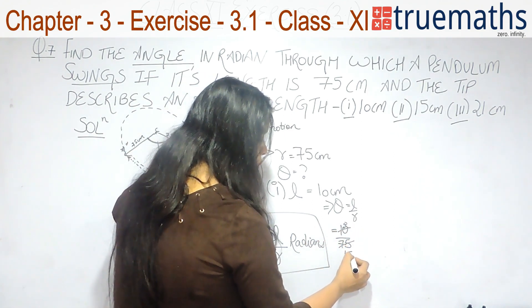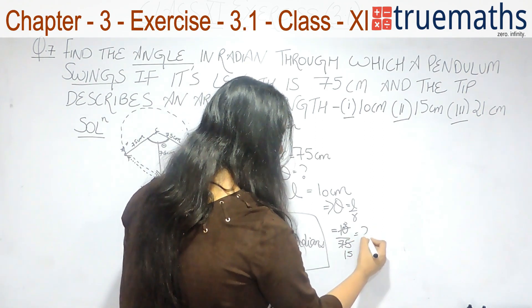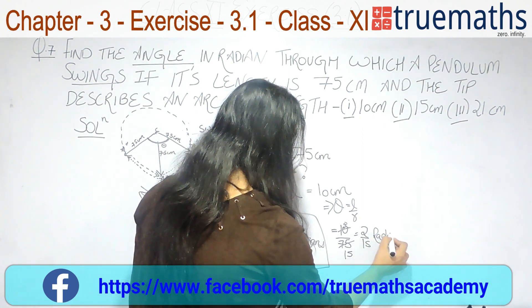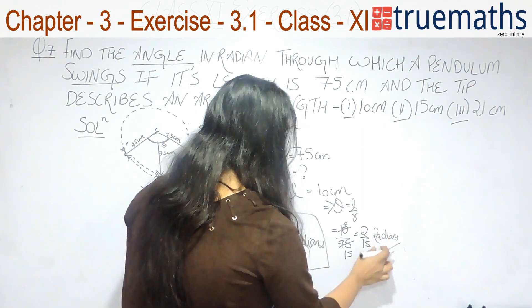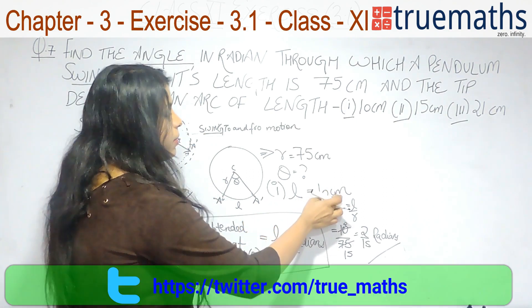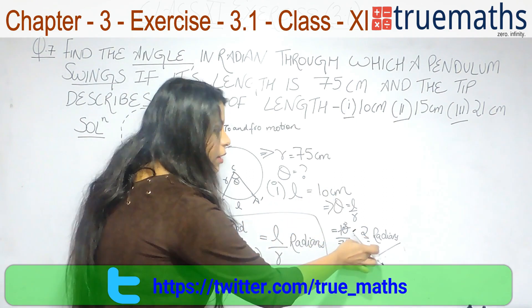So, it comes out to be 2 by 15 radian. This is your answer for the first part. That is, when L equals 10 cm, theta will be 2 by 15 radian.